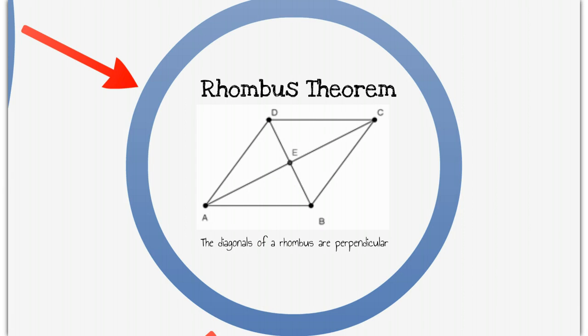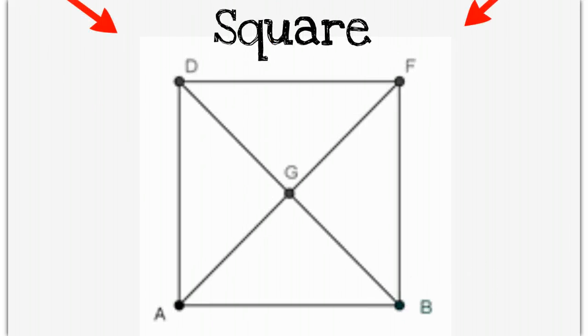The last parallelogram that we worry about is a square, but it turns out that a square is just a rectangle and a rhombus, and so all the things that are true about those are also true, and there's nothing special about a square. It does turn out that DG is congruent to GF, GF to GB, and GB to GA, but there really is no theorem that is true just about a square. It just takes on the theorems about all the other shapes.